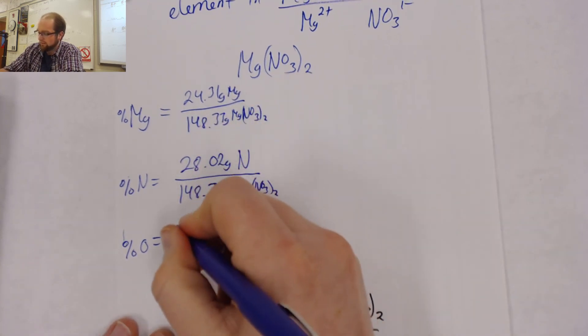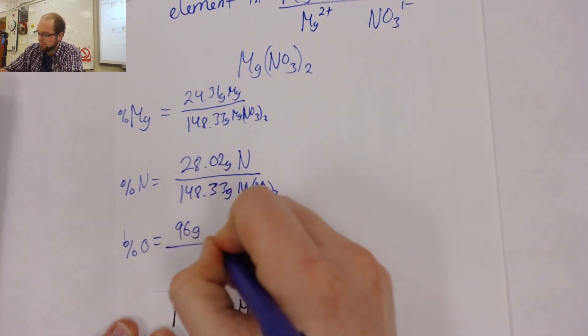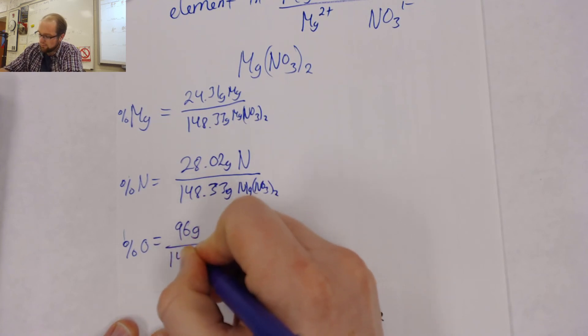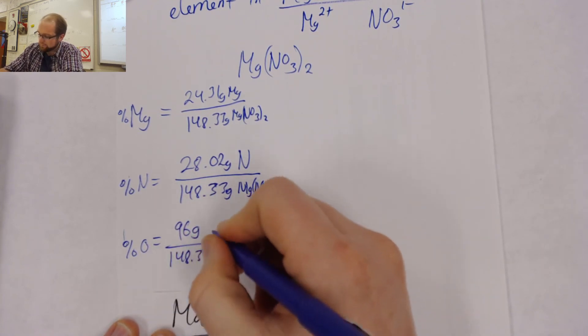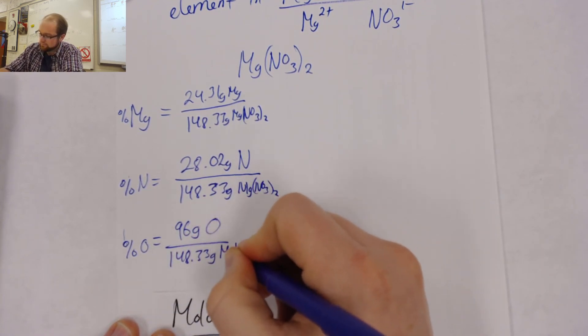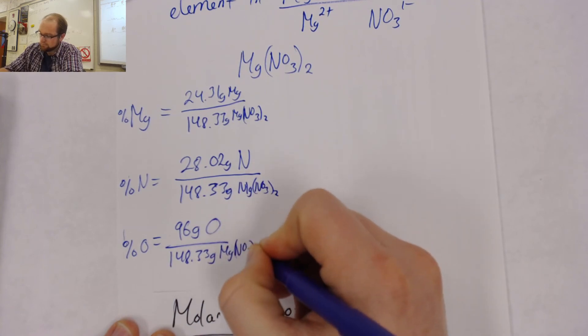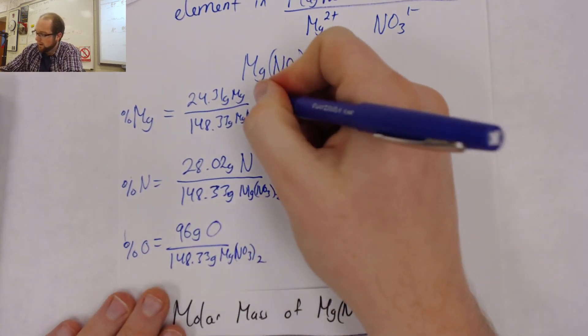We have nitrogen, which was 28.02 grams of nitrogen over, again, the molar mass. And then finally, our oxygen was our biggest component.